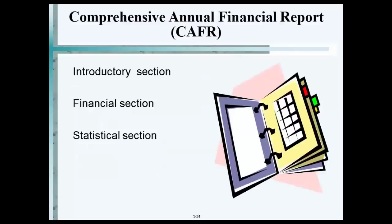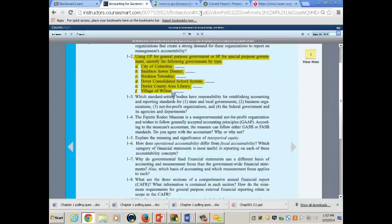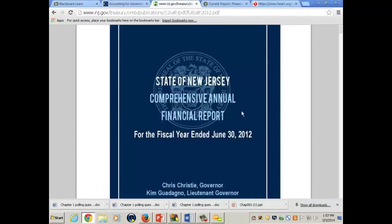Remember I talked to you about two versions of the financial report — the minimum required and then the full CAFR. This is what you'll be working on for the next couple of weeks at least: the Comprehensive Annual Financial Report. This is New Jersey's Comprehensive Annual Financial Report.